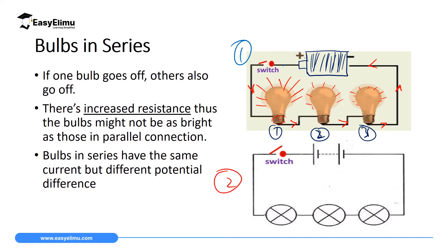But voltage in this case will be decreasing because in the first bulb there will be a lost voltage. Then the second bulb will also have a lost voltage. Then the third bulb will receive a voltage which has been reduced from bulb one and two. So if this cell is supplying us five volts, then bulb one can have five volts, bulb two will have 4.5 volts because there is a lost voltage of 0.5, and then bulb three will receive 4.0 volts. Since voltage is the one which determines the brightness of these bulbs, the first bulb will light more bright, the second bulb will light less bright, and the third one will light most less bright because it has received less energy.